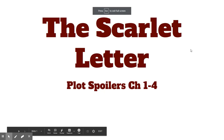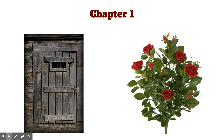These are plot spoilers for The Scarlet Letter, chapters 1 through 4. Chapter 1 starts with a description of a prison door and a rosebush growing outside it. This chapter is more about establishing the Puritan setting and the tone of the novel, as well as previewing some of its major themes. Look for a symbolic meaning to the image of the prison door and the rosebush.